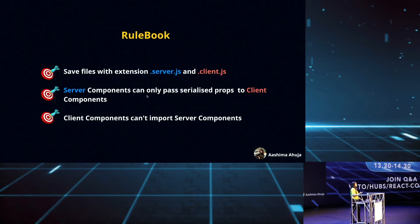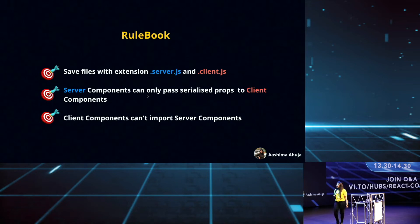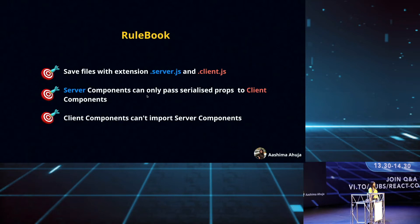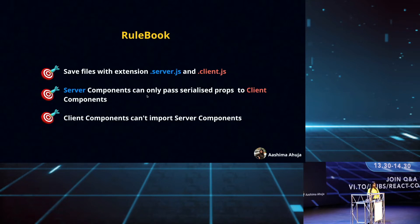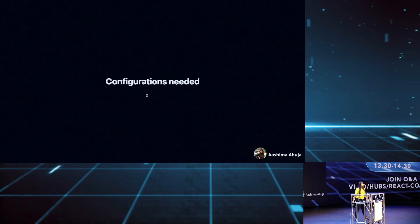First, we need to save our files with the extension .server.js and .client.js. This tells React which component is to be rendered on the server and which on the client. We can also save files with just .js extension, and this tells React that the component can be rendered both on server and client. Another important thing: server components can only pass serialized props to client components. And client components cannot import server components, but server components can import client components.